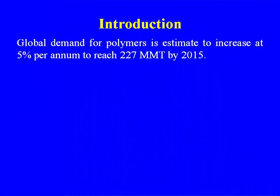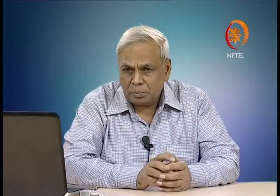Global demand for polymers is estimated to increase at 5 percent per annum. This figure is for plastics only, not for synthetic fiber or elastomer. The plastic industry in India consumes about 4.8 million tons per annum; over 96 percent is accounted for by commodity plastics. Per capita consumption is 4.8 kg, against the world average of 20 kg — per capita consumption is always less wherever the population is large.